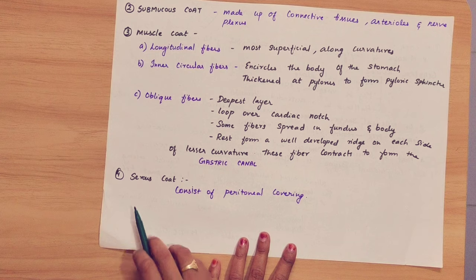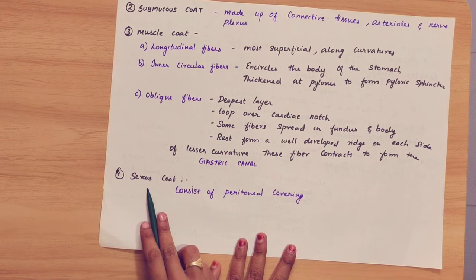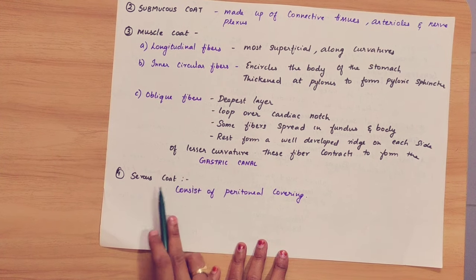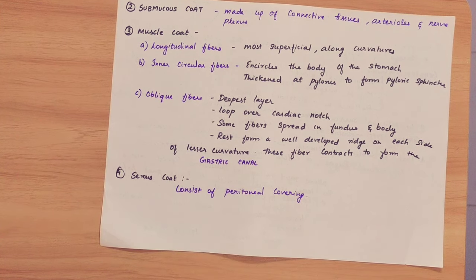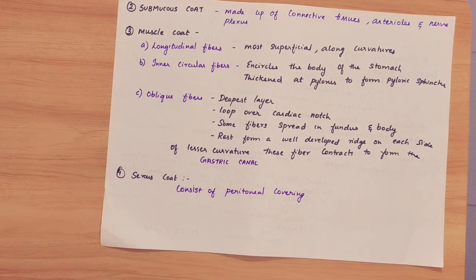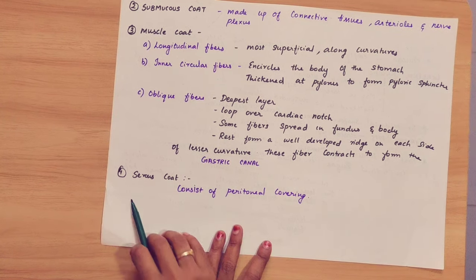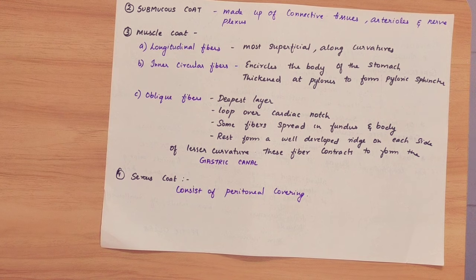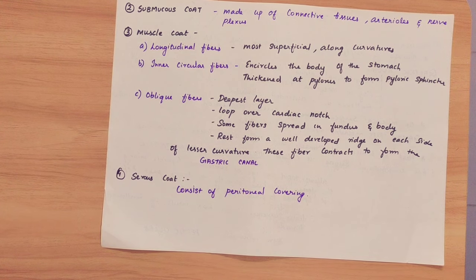Coming to the last layer — the serous coat. The serous coat consists of the peritoneal covering. These are the four layers making up the interior of the stomach.